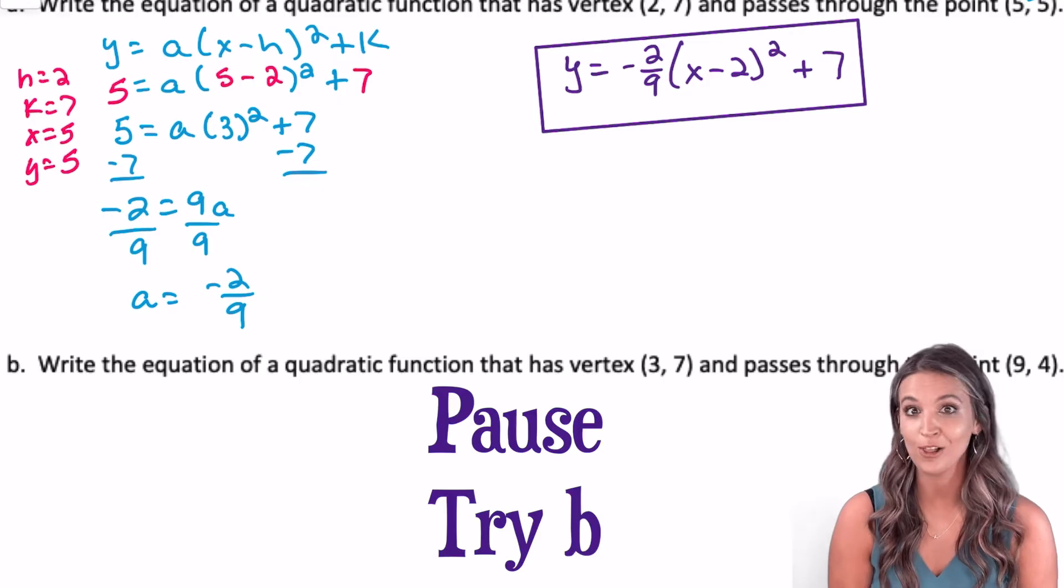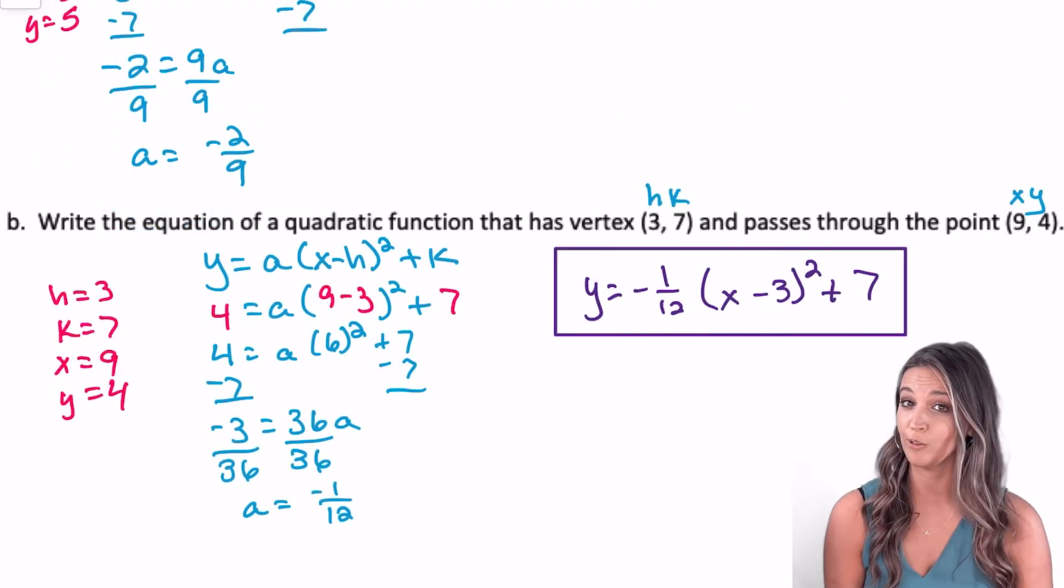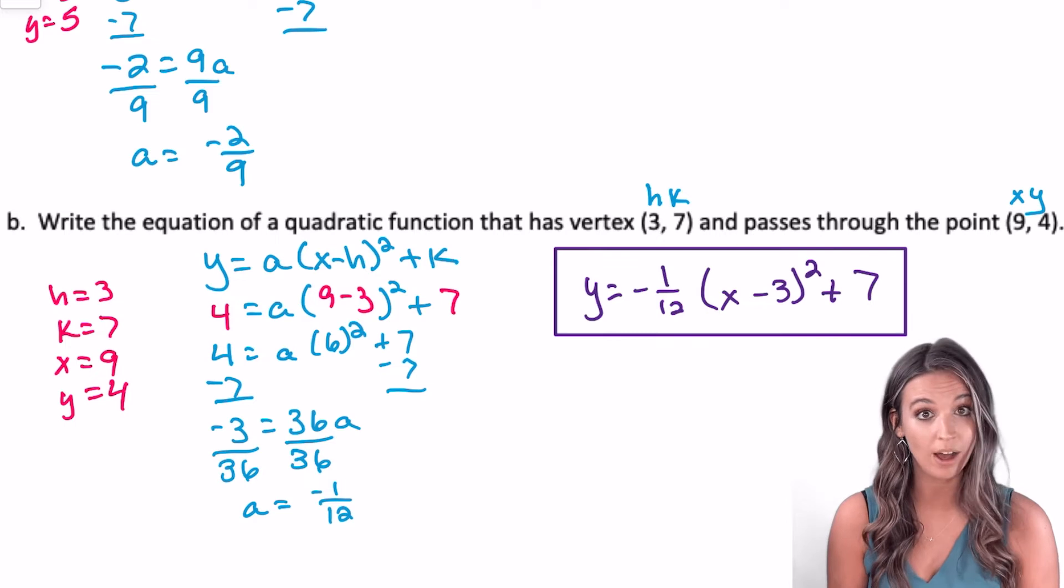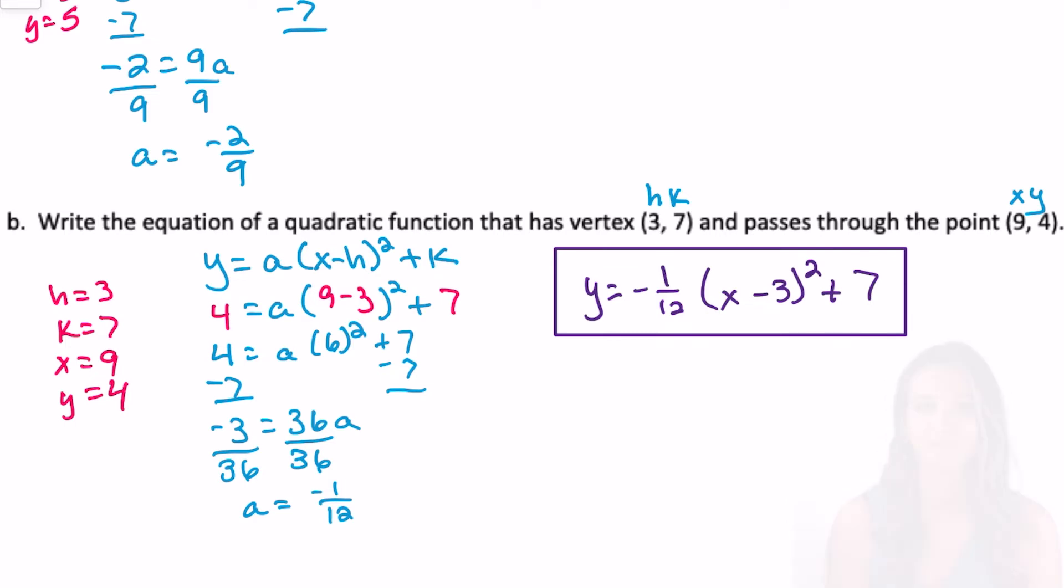Pause and try B all on your own. Check your a value. If it's incorrect, pause, look through the work, and go back and fix your mistake. Next, we're going to write a quadratic function given x-intercepts and a point.